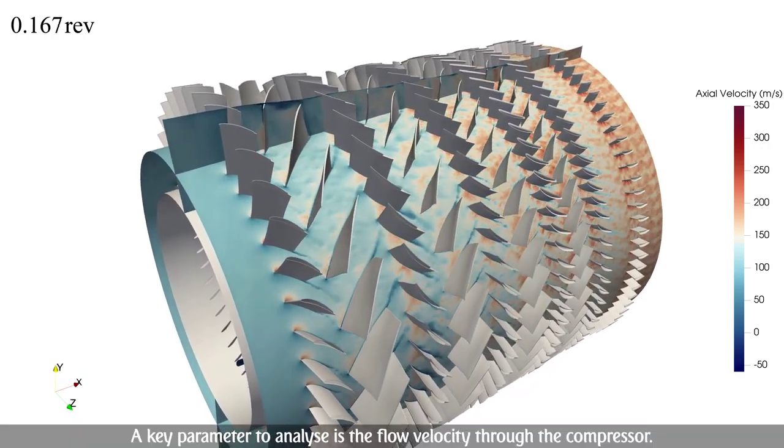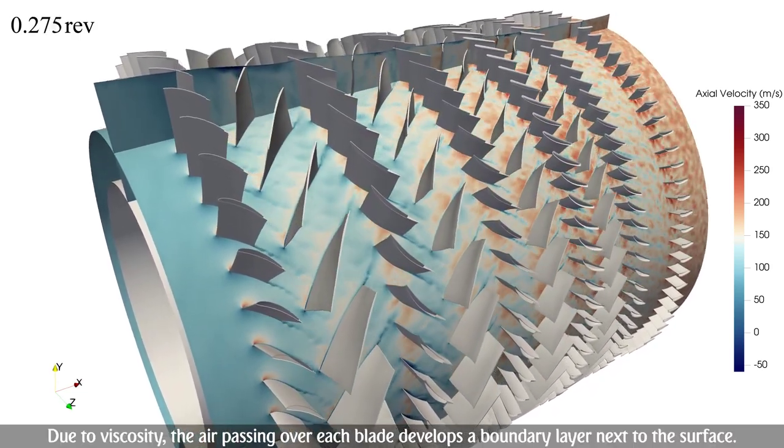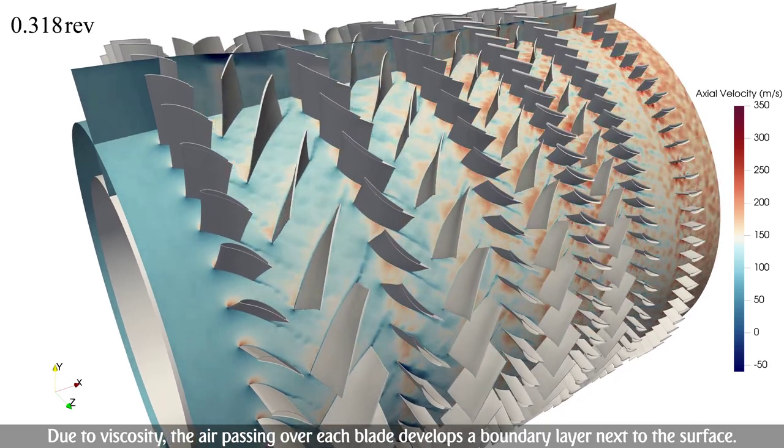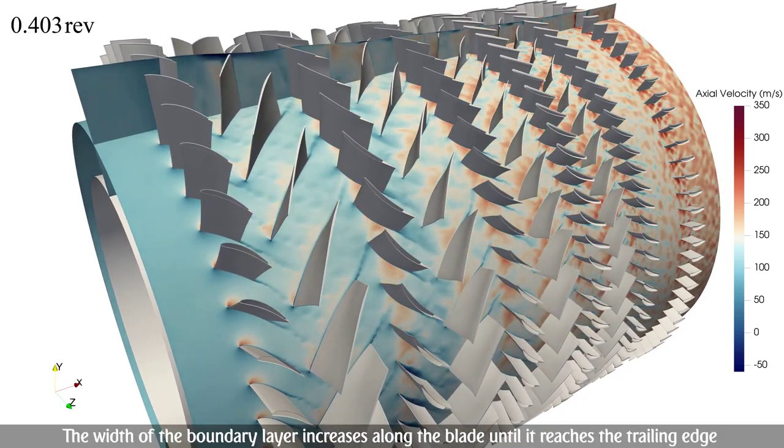A key parameter to analyze is the flow velocity through the compressor. Due to viscosity, the air passing over each blade develops a boundary layer next to the surface. The width of the boundary layer increases along the blade until it reaches the trailing edge.